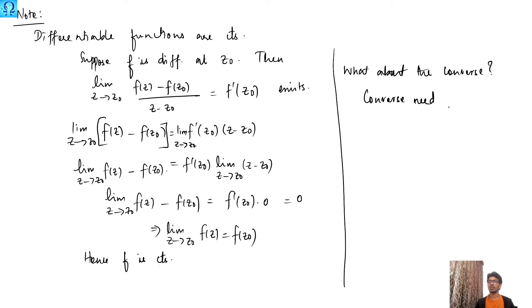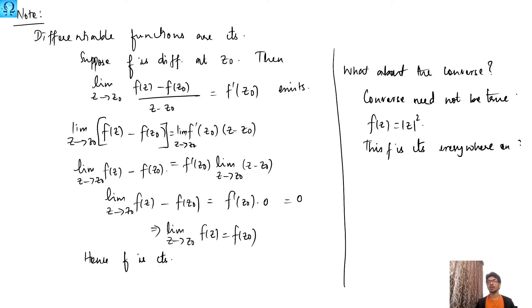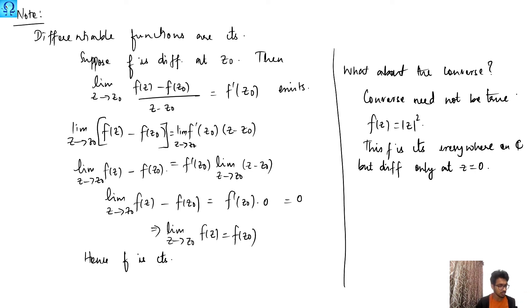We conclude this because if we consider the function f(z) = |z|², this f is continuous everywhere on ℂ but differentiable only at z = 0. So this function helps us conclude that continuous functions may not be differentiable ones.